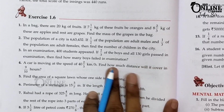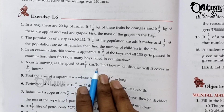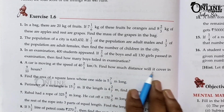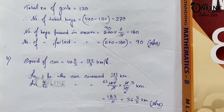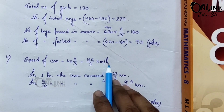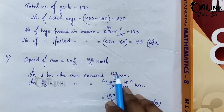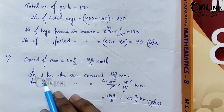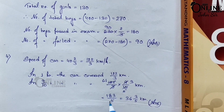Sum number 4: a car is moving at the speed of 40 and 2/3 km/h. Find how much distance it will cover in 9/10 hours. Speed equals 40 and 2/3, which means 122/3 km/h. In 9/10 hours the car covers 122/3 multiplied by 9/10, giving 183/5, which equals 36 and 3/5 km.